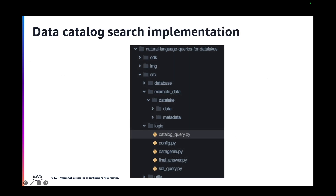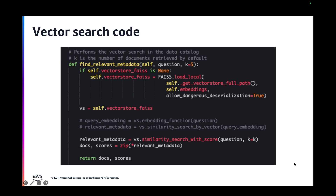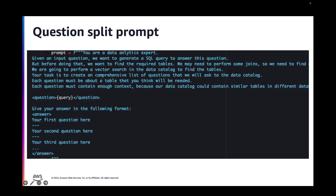Let's look at the implementation in the code. All the code for the data catalog search is in the catalogquery.py file. Here is the code for the vector search — it's quite short. We use the FAISS library, which is an in-memory vector database. We load the stored database and then use the similarity_search_with_score method — that's all you need to perform a vector search. Another extract I want to show is the prompt we use to split the questions. We say we are going to perform a vector search in the data catalog to find the tables, and the task is to create a comprehensive list of questions to ask the data catalog. The hard work is done by the LLM — we're using generative AI at all steps.